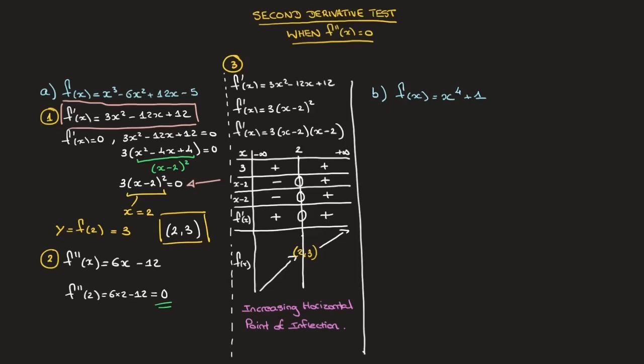Before working through the second example, let me point out that a common mistake is to think that as soon as the second derivative equals zero, we must be dealing with a horizontal point of inflection. That is in fact incorrect. And to show that, let's get started with this example.